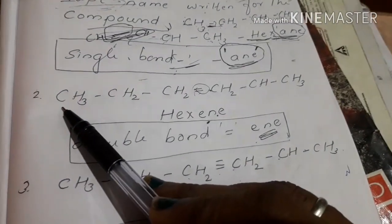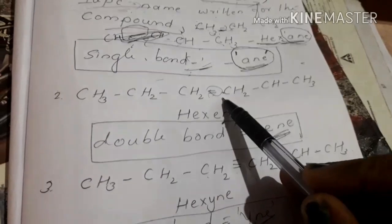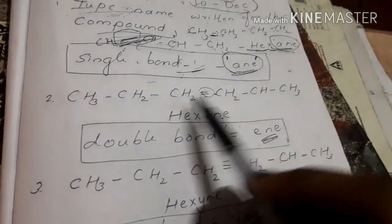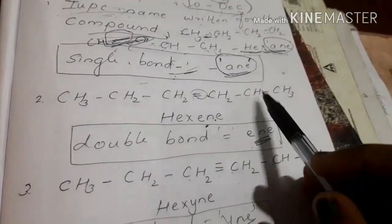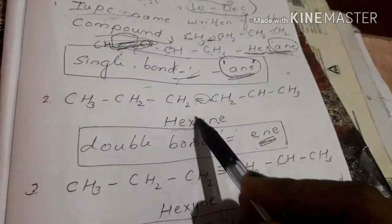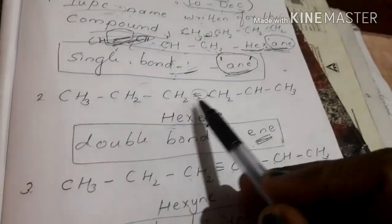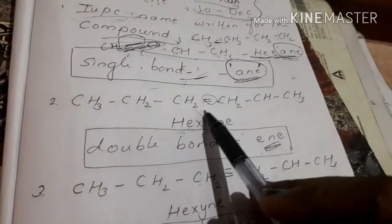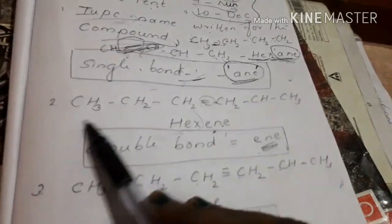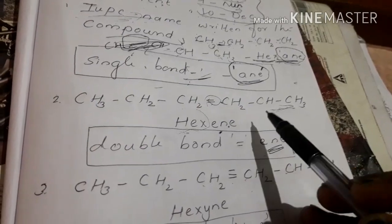We use carbon: 1, 2, 3, 4, 5, 6. For 6 carbons, we use hex. We use double bond, so the suffix is 'ene'. That's why we use IUPAC naming.